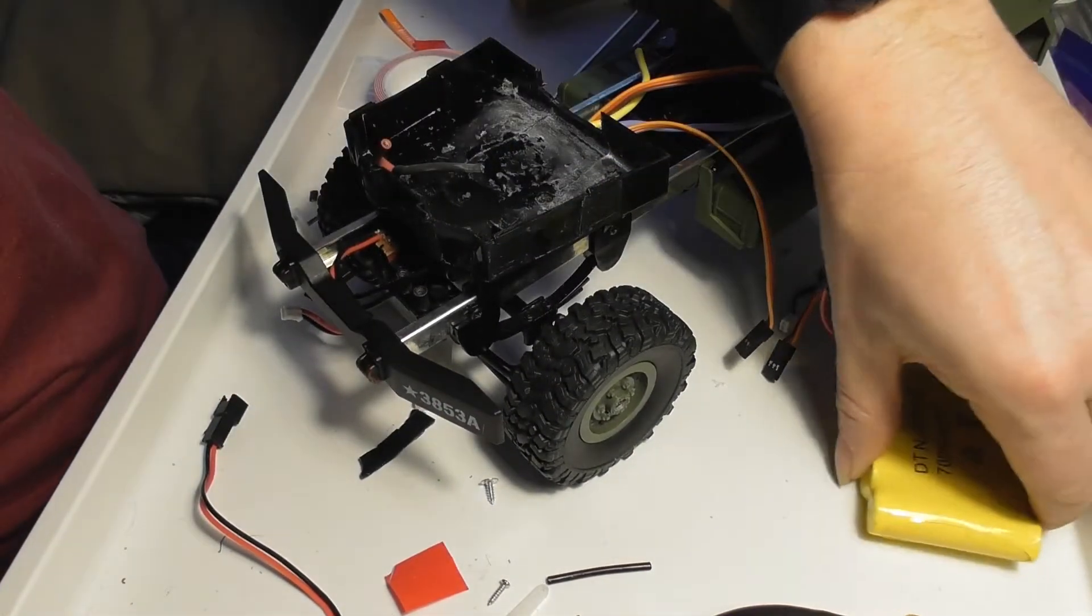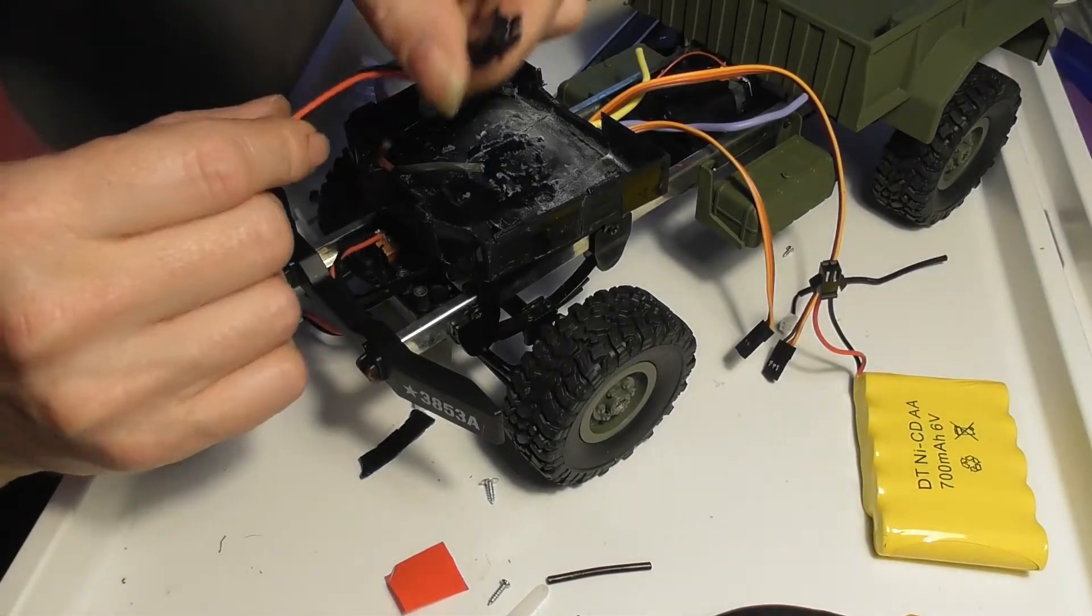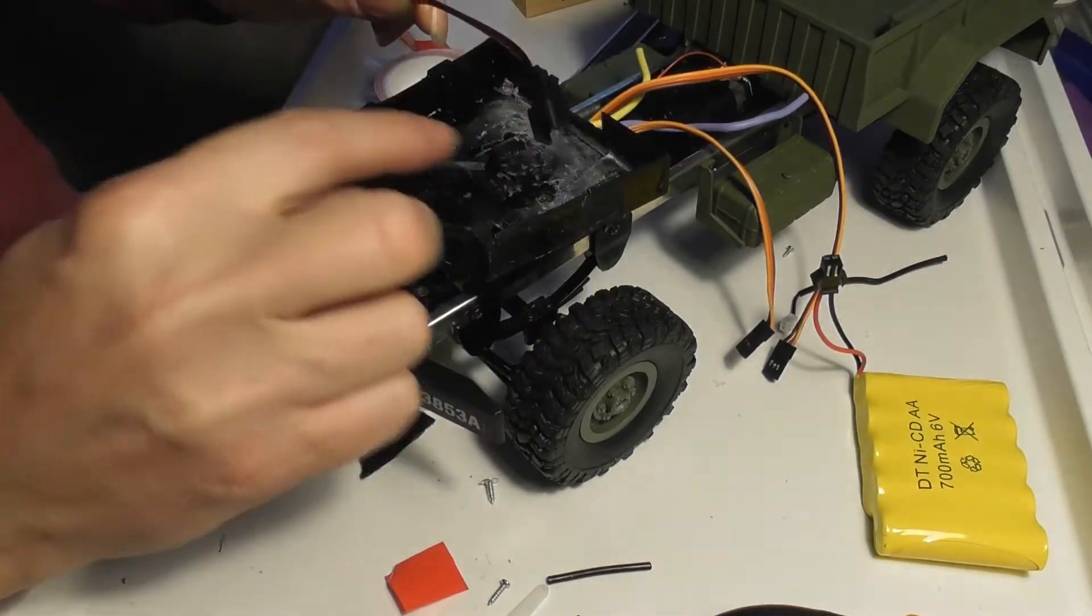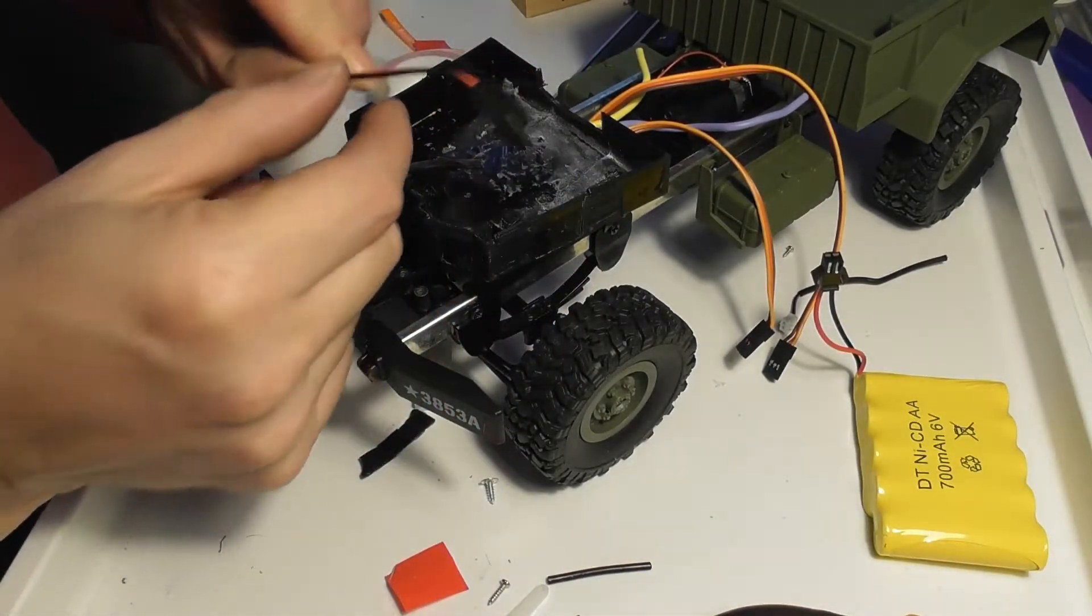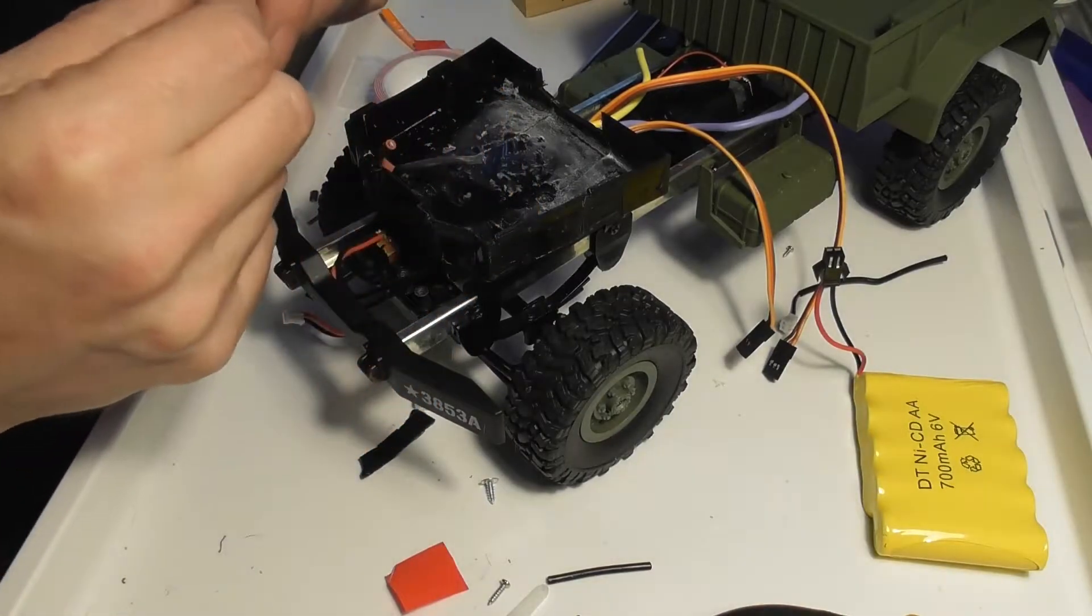The first thing to do will be to actually put this wire here onto the end of the power input to the speed controller.